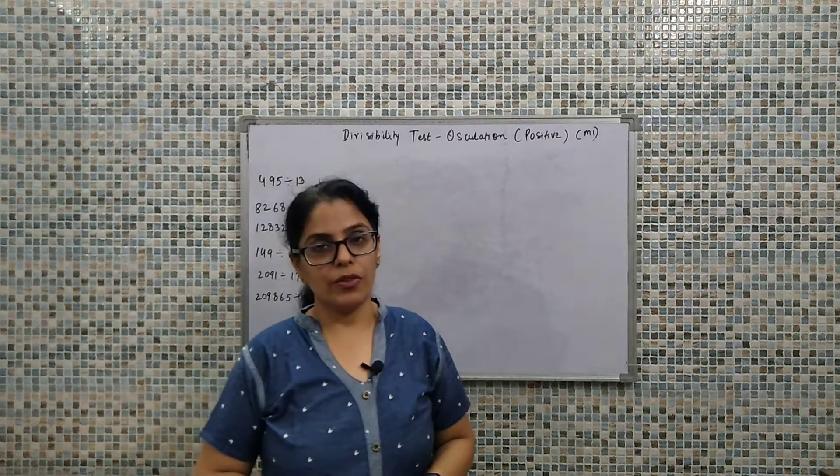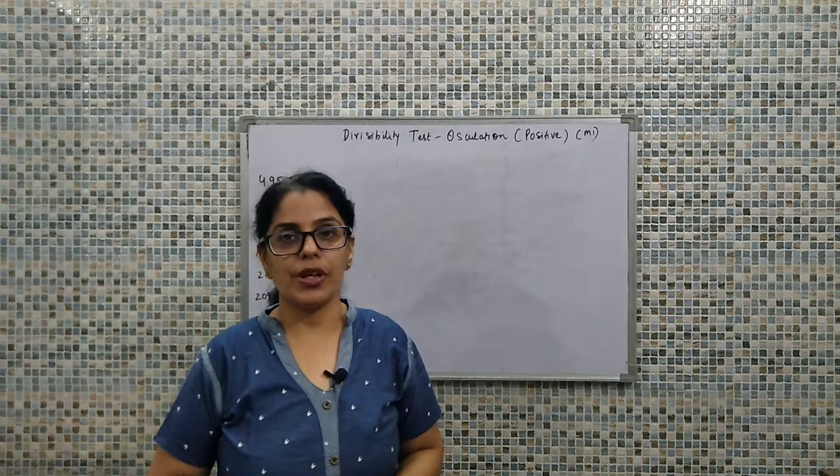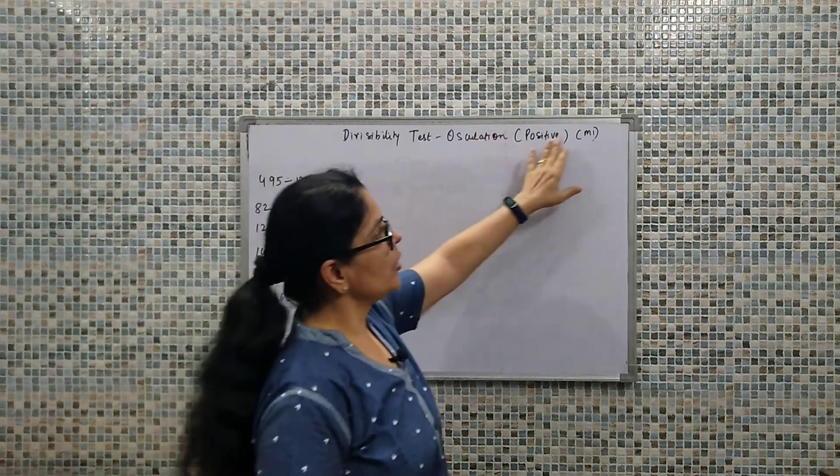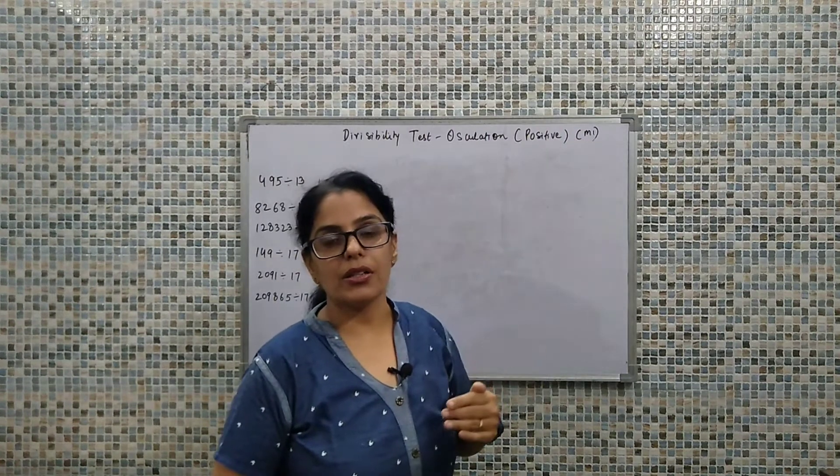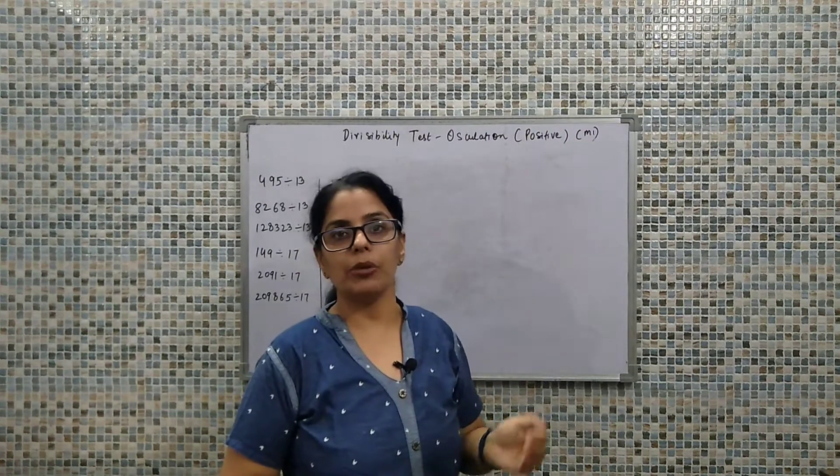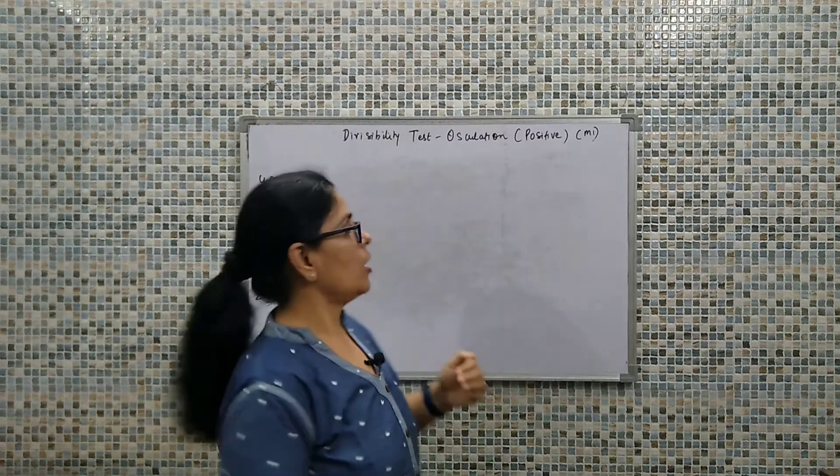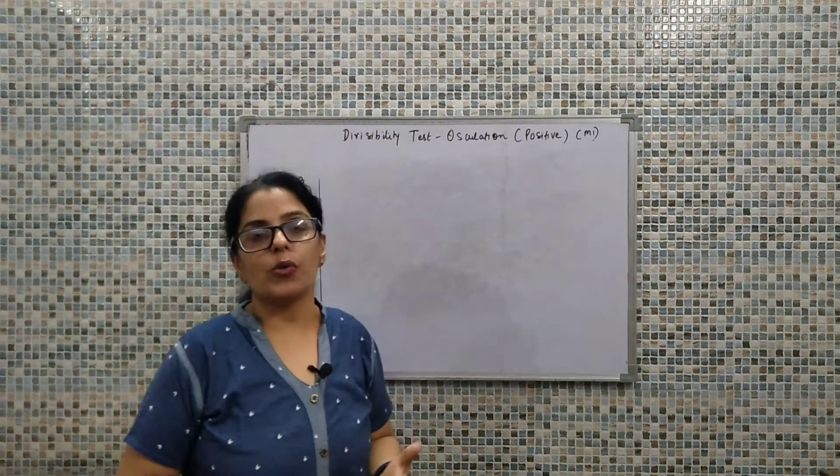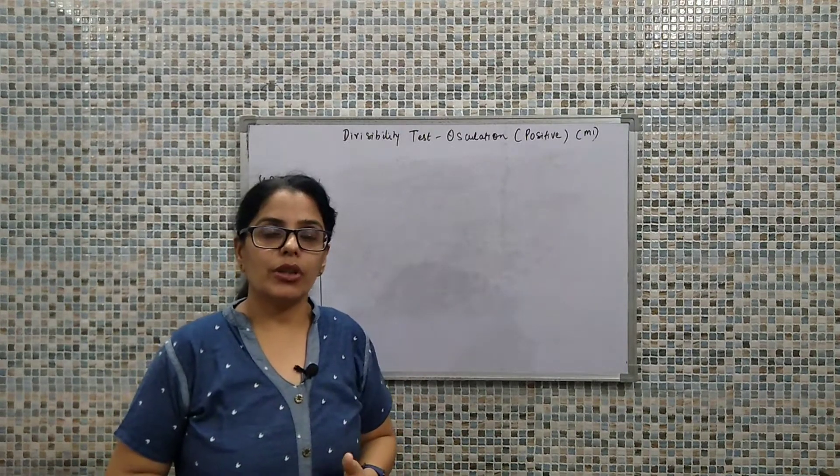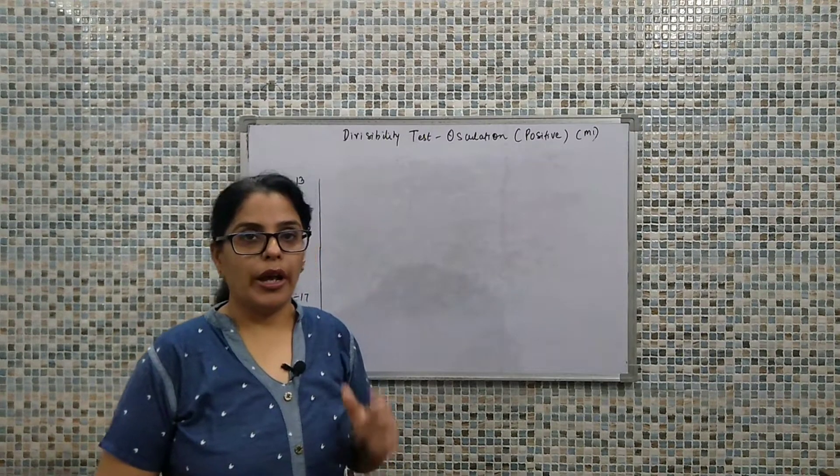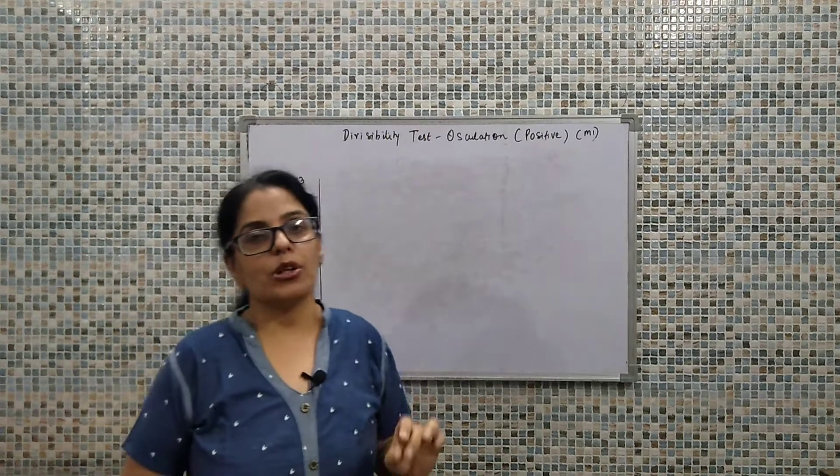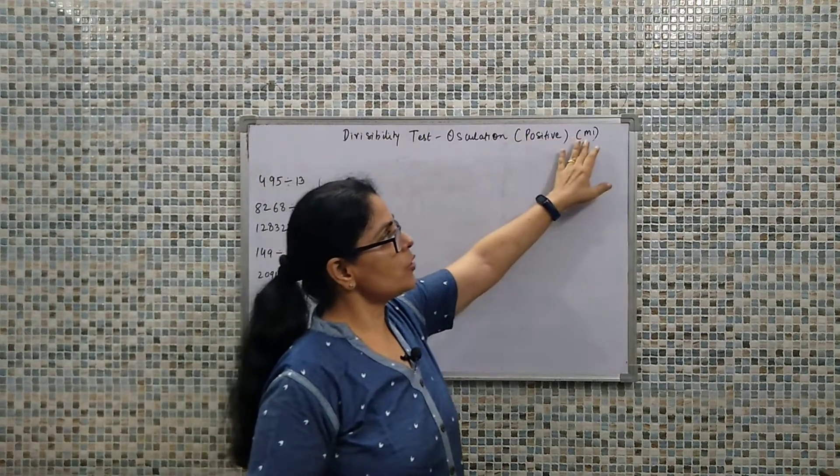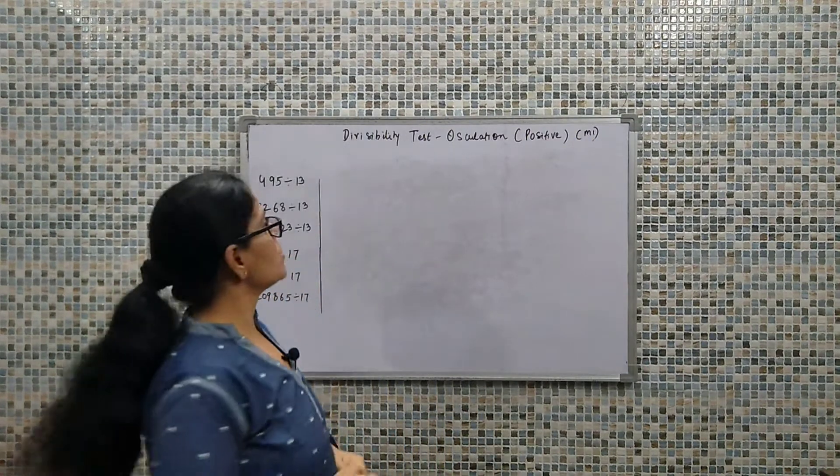Hello viewers, in today's session we would be extending the discussion which we have started in the last video, that is divisibility test using positive osculation using first method. In the previous video we have seen divisibility by 3 and 9. In today's discussion we will see if we have to divide by 13 and 17. Let's start with the discussion.